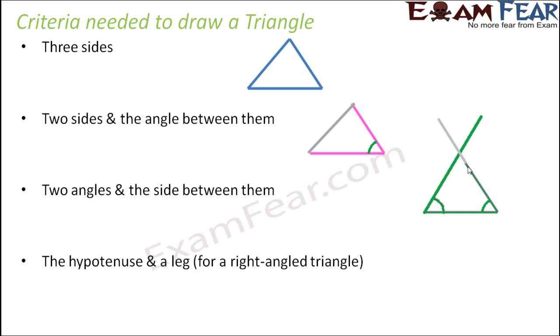Or if you are trying to draw a right angle triangle, for which we always know that there is a 90 degree present. There is a right angle present. That is why it is a right angle triangle. So for a right angle triangle, if you know the length of the hypotenuse and any one length, whether it is the base or the perpendicular, any one of them and the hypotenuse.